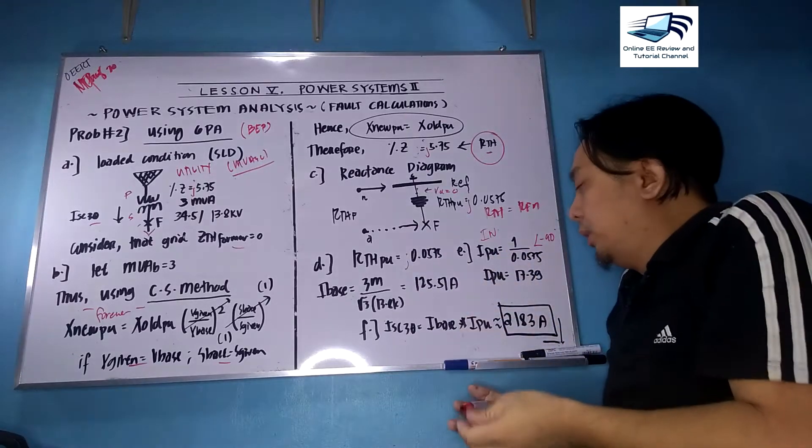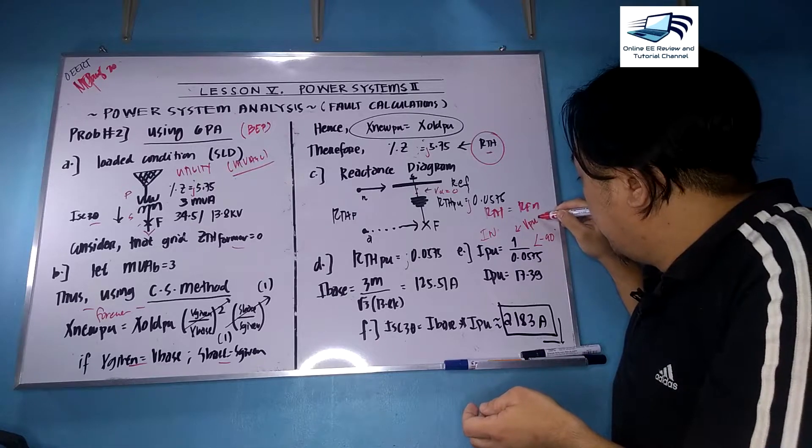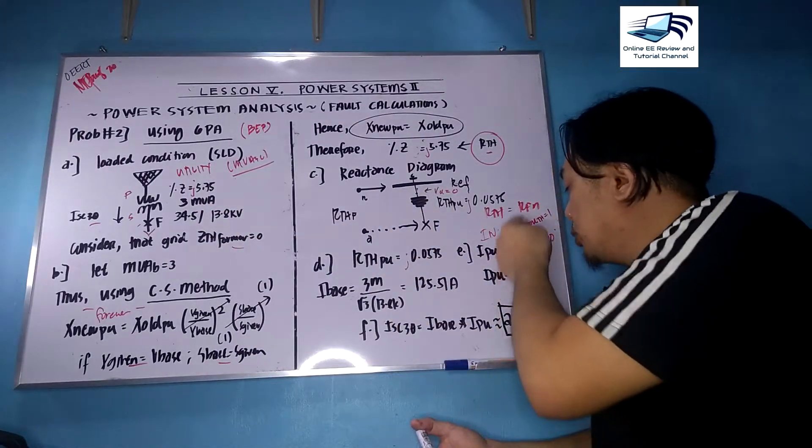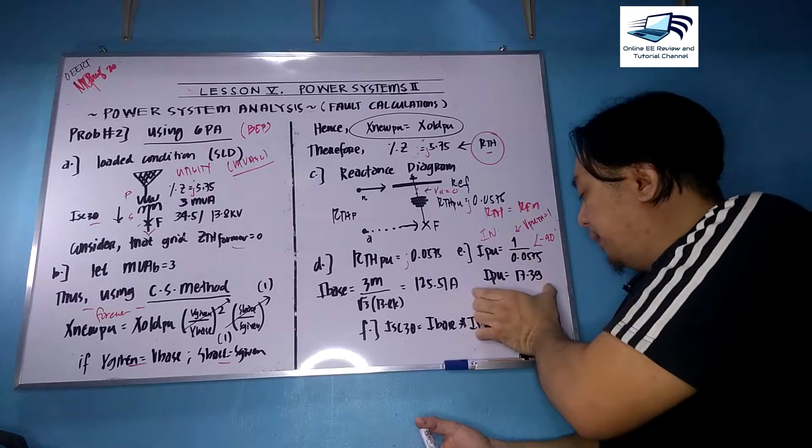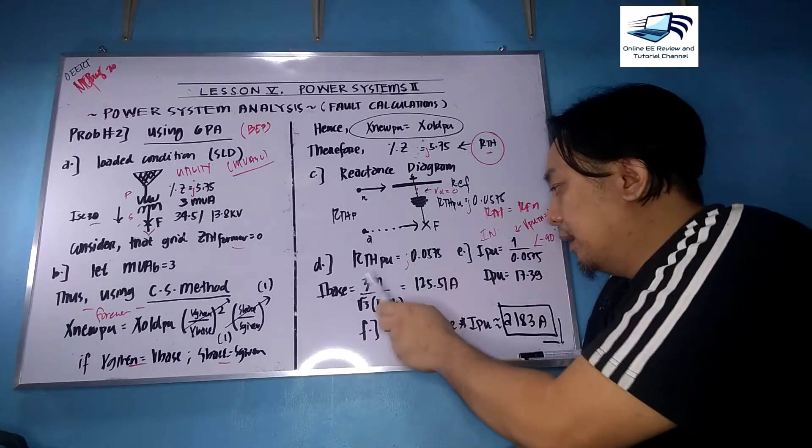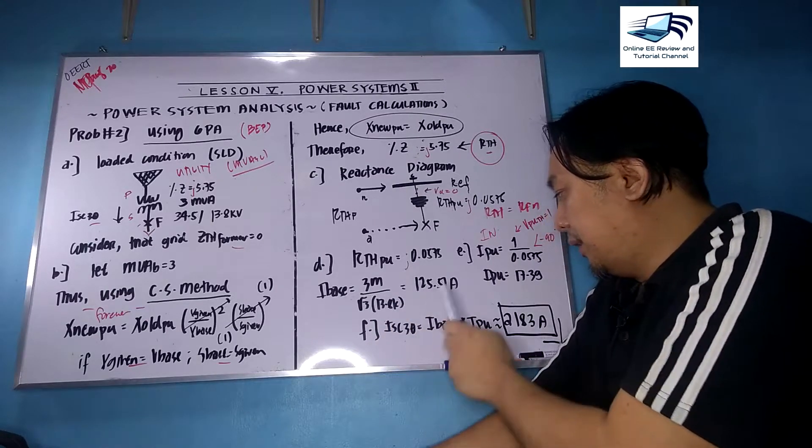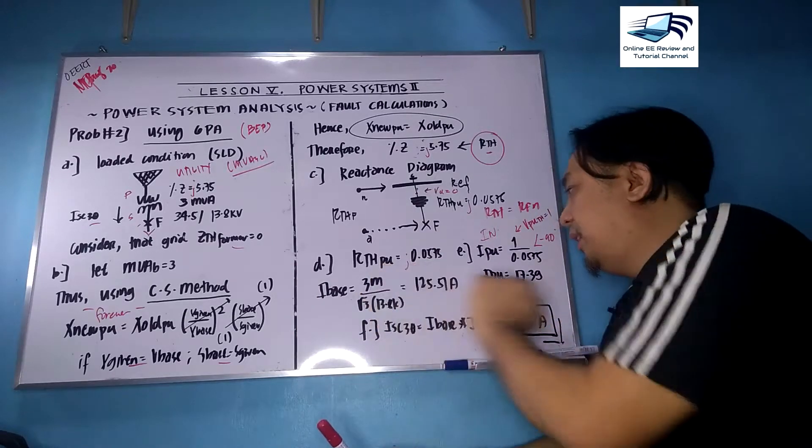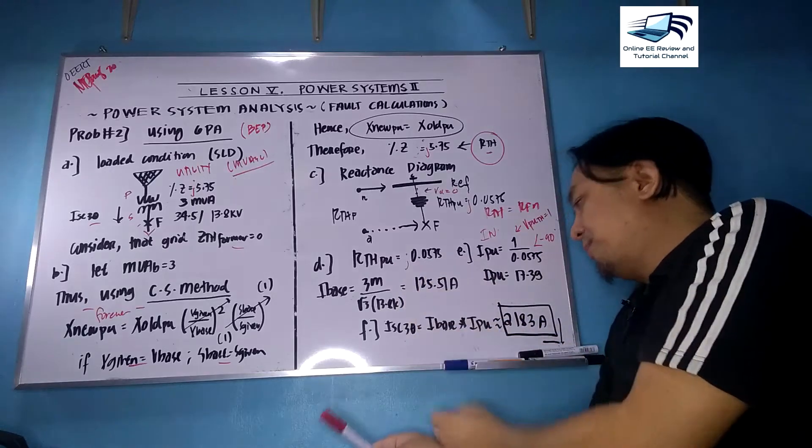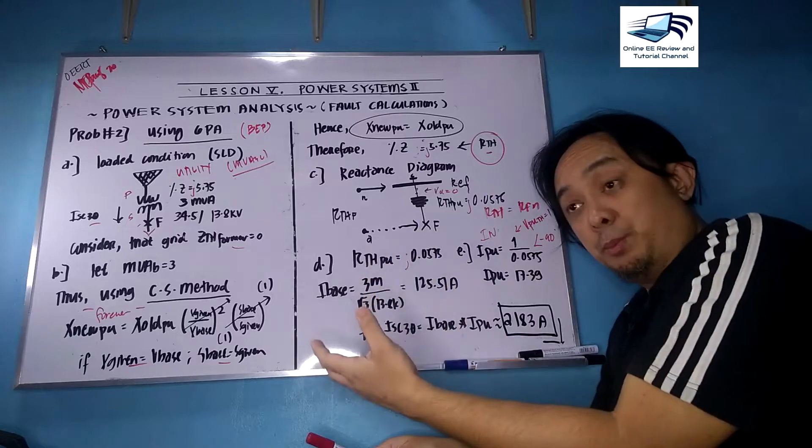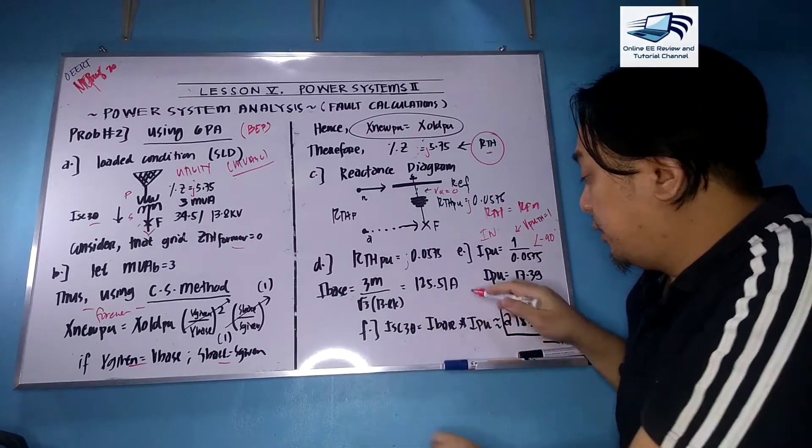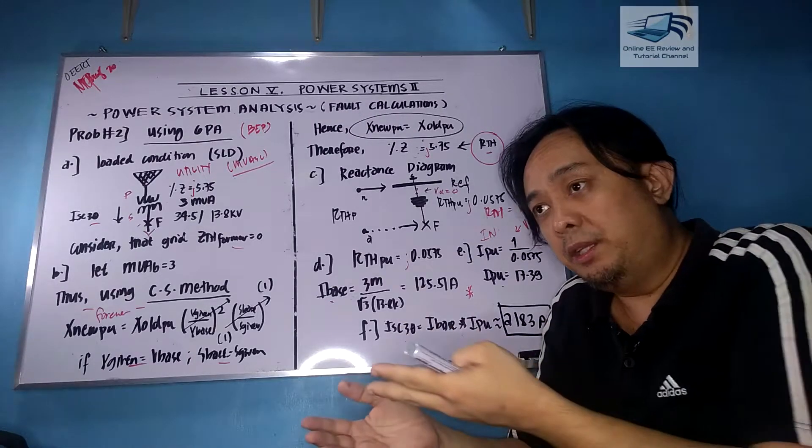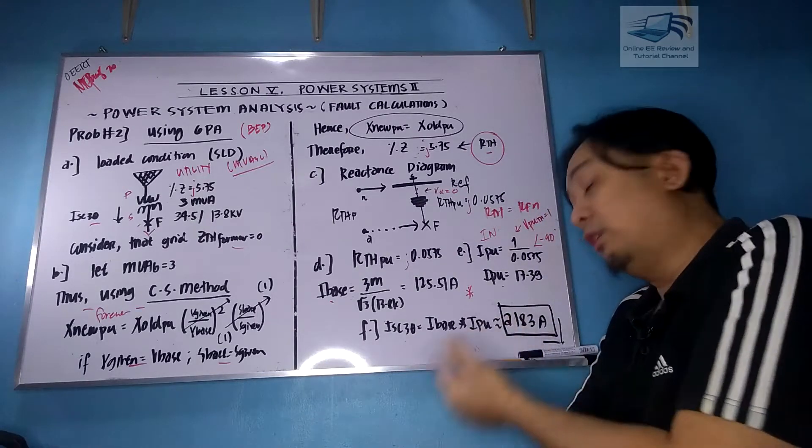Get the per unit current considering a linear system. Your per unit voltage at the fault is one because V given equals V base on the secondary side, 13.8. So 1 over 0.0575, the answer is 17.39 per unit. Then get I base: 3 million over square root 3 times 13.8k, the answer is 125.51. This is procedure number five: get I_PU and I base. Last but not least, the sixth procedure: get ISC three-phase by multiplying I base by I_PU. The answer in this board problem is approximately 2182.6, but we can round it off to 2183 amperes.